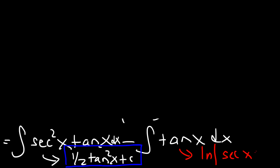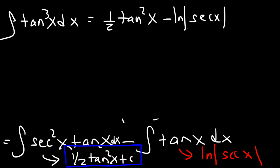So now, let's write the final answer. So the final answer for the integral of tangent cube x dx, it's going to be 1 half tangent squared x minus the natural log of secant x. If you were to take this negative sign and put it here, that would be secant to the minus 1, which is cosine. And then plus c.